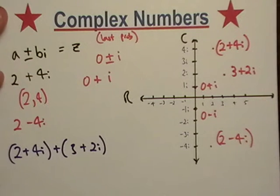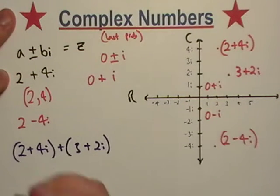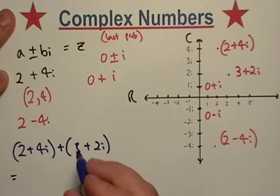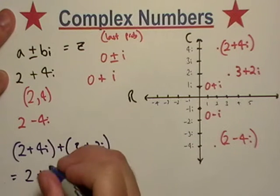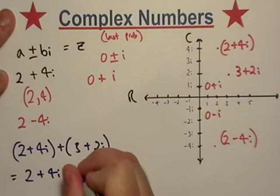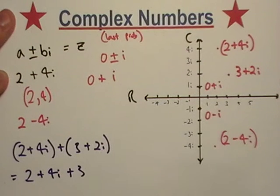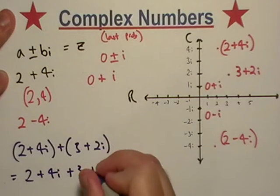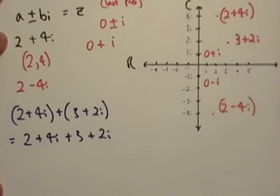What I like to do is I just like to basically treat i just like a variable and then I simplify it when I'm done. So this right here is going to be equal to 2 plus 4i plus 3, I distribute the positive sign and it really doesn't change anything when I do that.